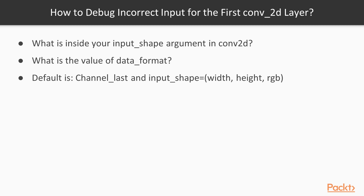That means the channel dimension is presented as the last argument. In general, input_shape should be a tuple with three values. When working with images, we'll have width, height, and RGB — basically the number of channels. If it's grayscale, it will be one. If it's a color image, it will often be three, because we have three channels. Depending on your dataset, make sure input_shape is correctly defined and that data_format is at its default value.